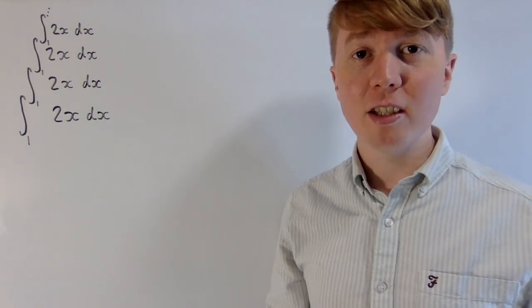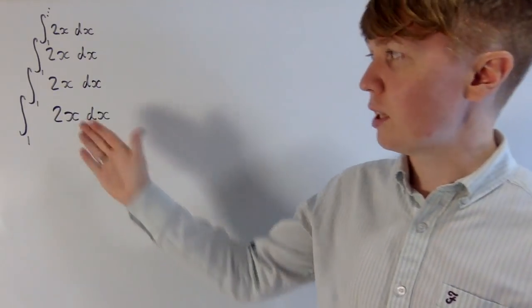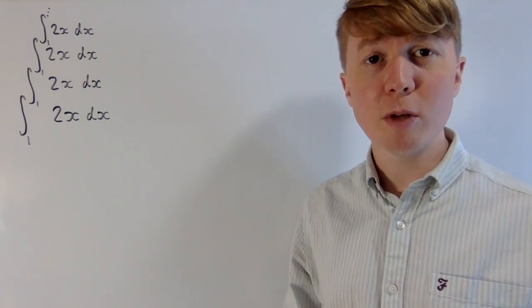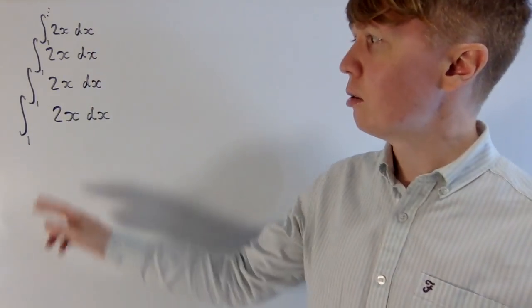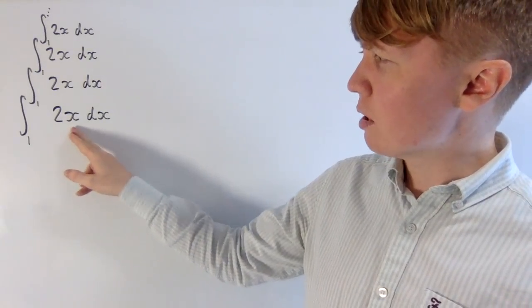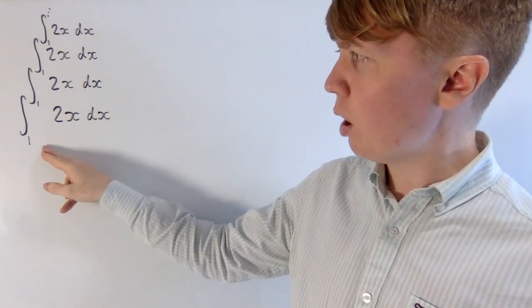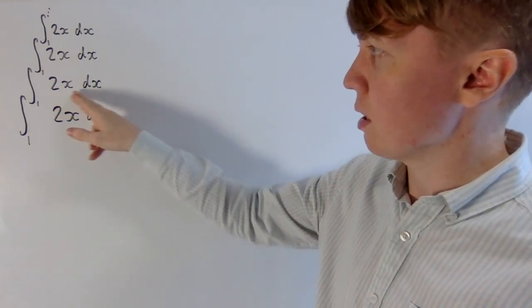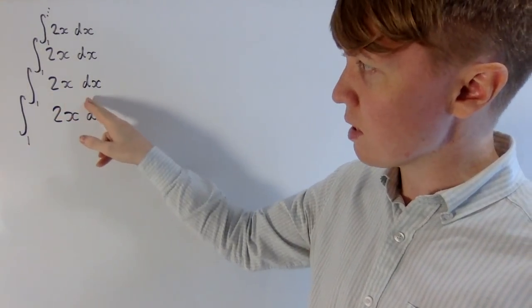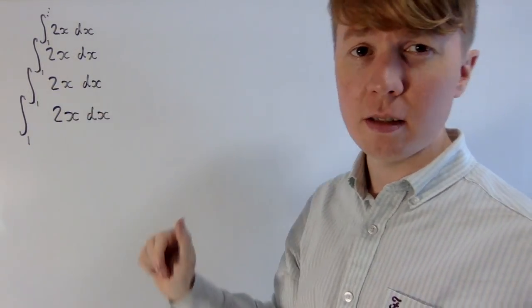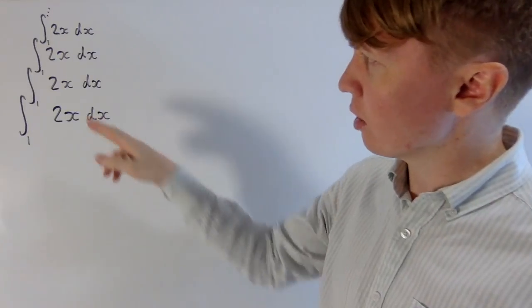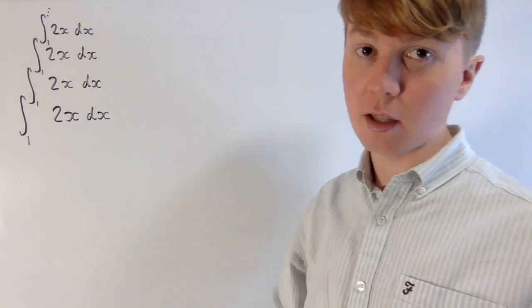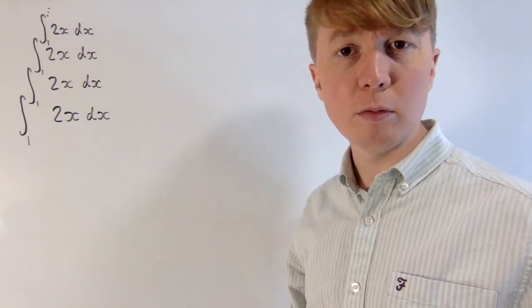We're going to have a look at how to calculate the value of this infinite stack of integrals. First, let's think about what this even means. Starting at the bottom, you're integrating 2x with respect to x between 1 and your upper limit of integration. To calculate that upper limit, you need to do another integral of the same thing between 1 and its own upper limit, and so on and so on forever.